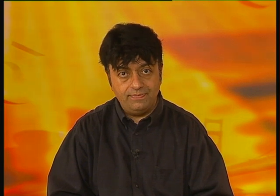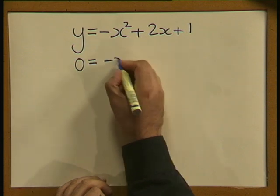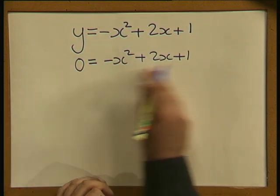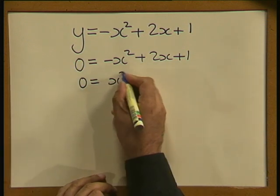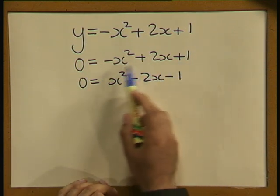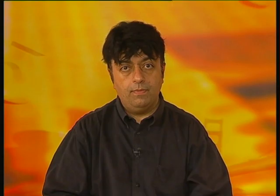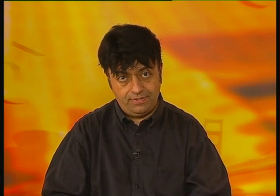It is clear that this graph cuts the x-axis, and we need to find the coordinates of those intercepts. We substitute y equals 0, since all along the x-axis y is 0. So we have 0 equals negative x squared plus 2x plus 1. Multiplying through by negative 1 gives 0 equals x squared minus 2x minus 1, and we can see that this does not factorize, so we will use the quadratic formula: x equals negative b plus or minus the square root of b squared minus 4ac, all divided by 2a.